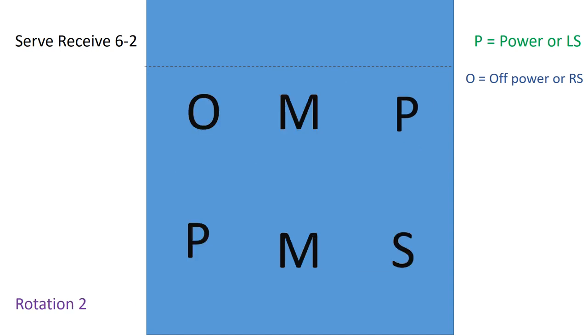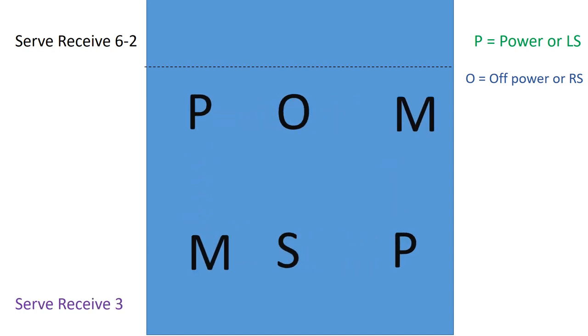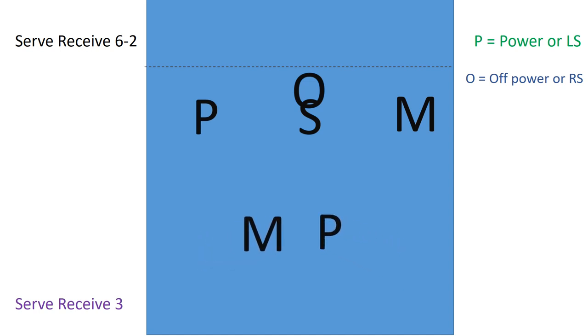So back, we'll do a rotation now. In our last serve receive rotation, our off power hitter is going to be pushed up by our setter. The other four players are going to fill in and be our four passers. So our two back row players are going to be standing there and our two front row players are going to drop back.